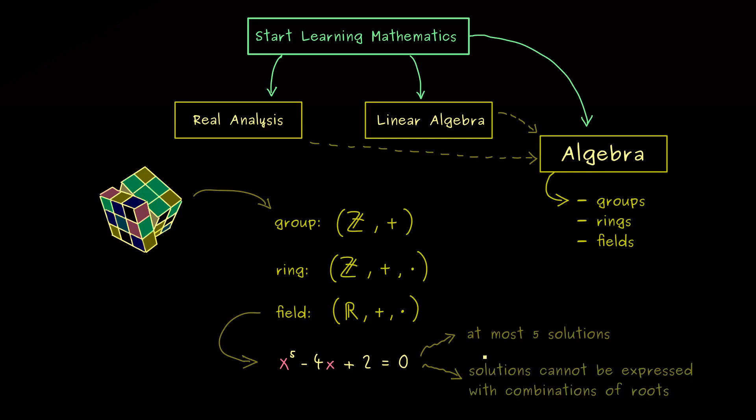More precisely, it means that the solutions cannot be expressed by using the integers, roots, and the basic calculation symbols. This is something that is indeed possible if the degree here is less or equal than 4. However, at degree 5 this breaks down, which algebra or more precisely Galois theory shows.